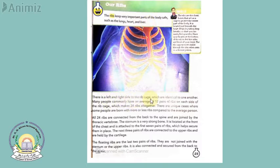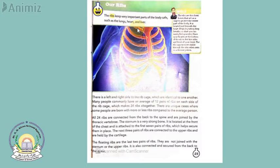There is a left and right side to the rib cage which are identical to one another — they are not differently made, they are similar, as you can see in this picture. Many people commonly have an average of 12 pairs of ribs on each side of the rib cage. One side has 12 ribs and the other side has 12, making 24 total. You can find a proper image of ribs on the internet and count them.